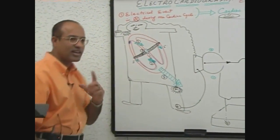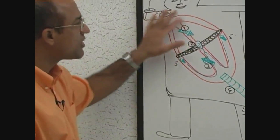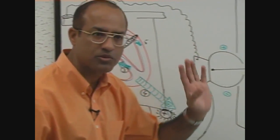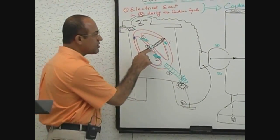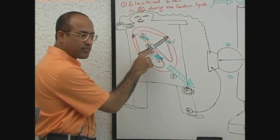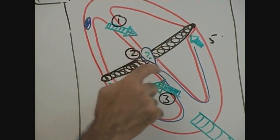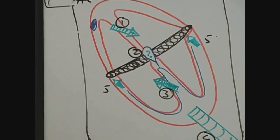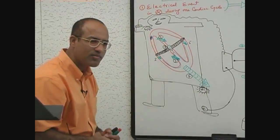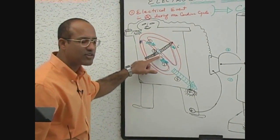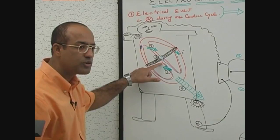The next electrical event: the atria are completely depolarized, and the needle returns to neutral position. The next electrical event is AV nodal depolarization. When the AV node is undergoing depolarization, there is no significant current to move the needle, so electrically the heart is silent — this is called AV nodal silence.